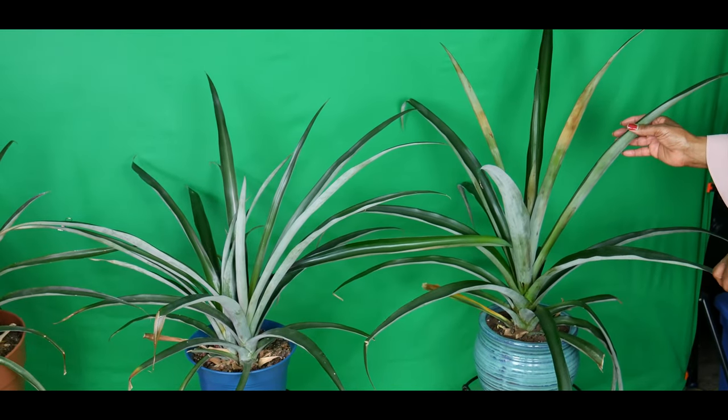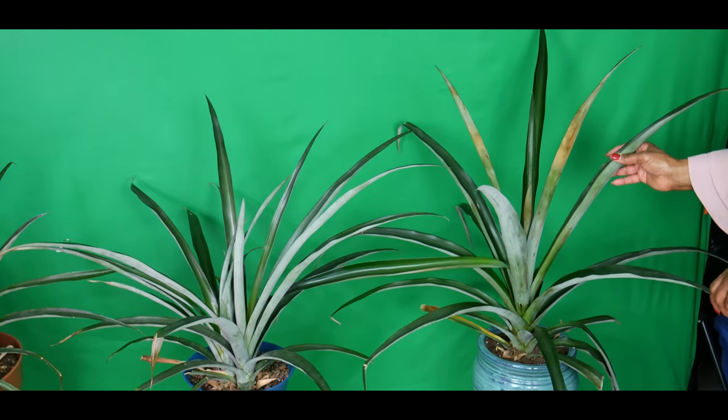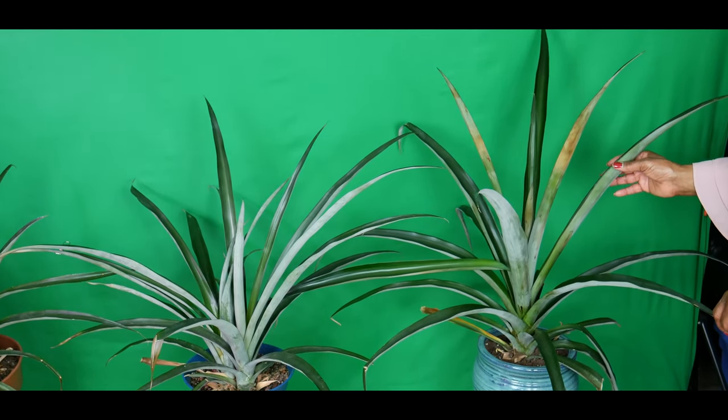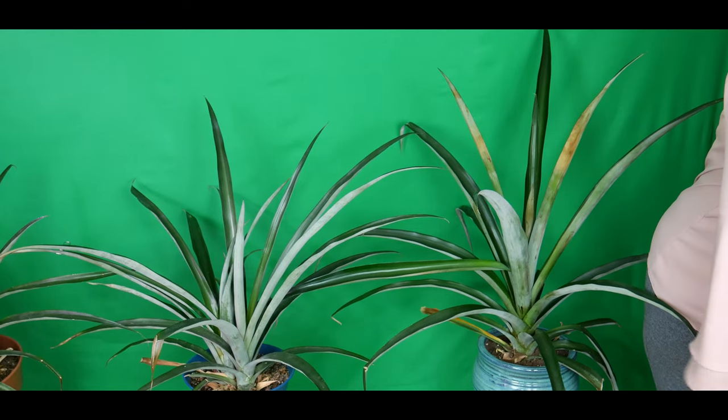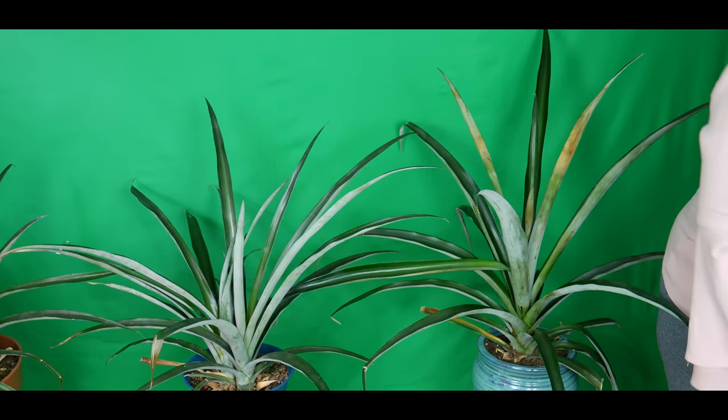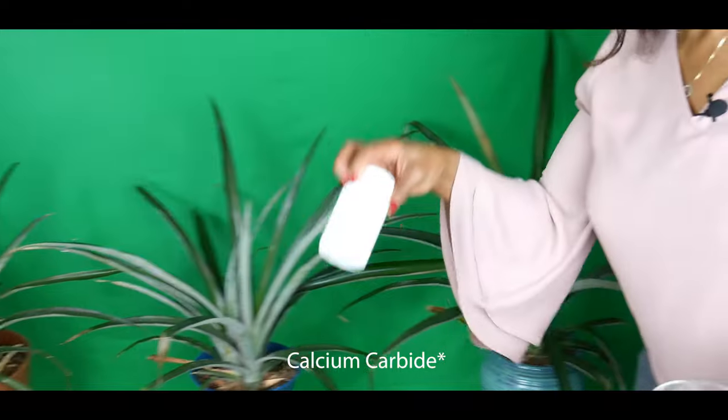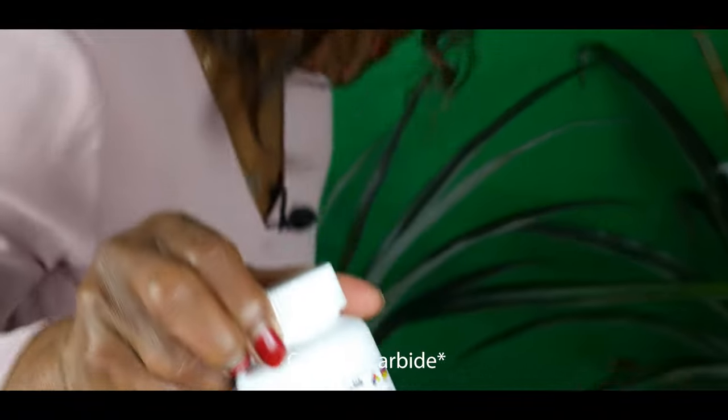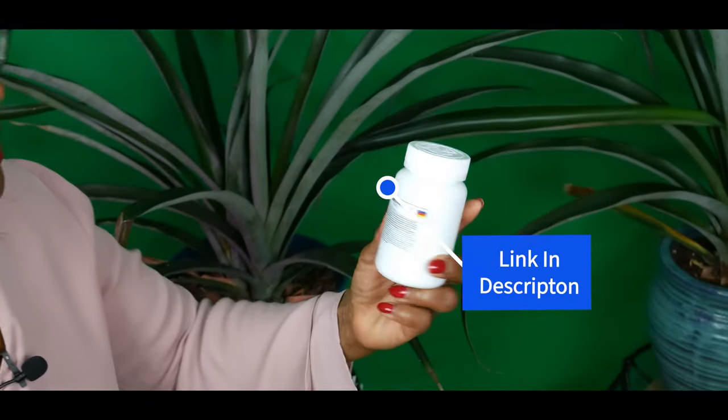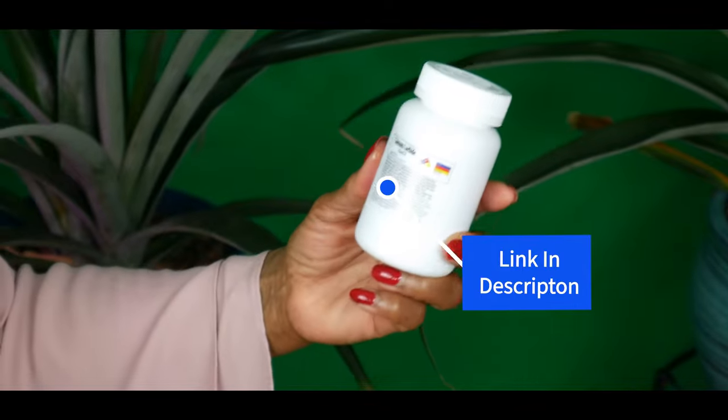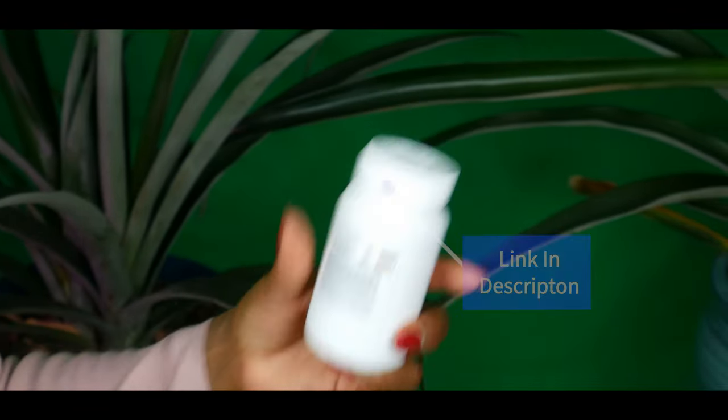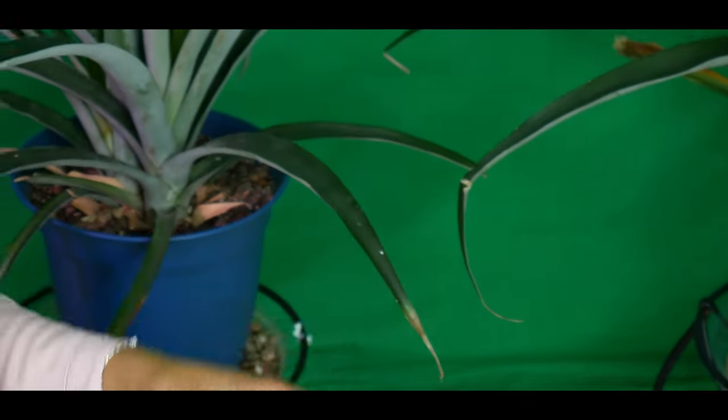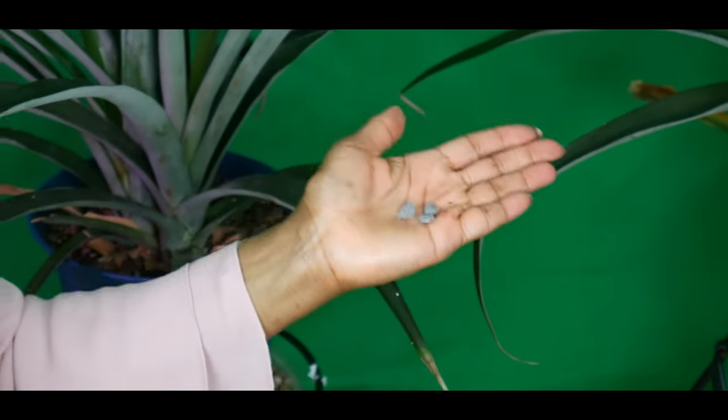I'm going to show you the calcium carbide that I'm going to use, which is right here. I ordered this on Amazon and I did some research and found that this is a pretty good product. It has little pellets, so I'm going to put about three pellets in the water.